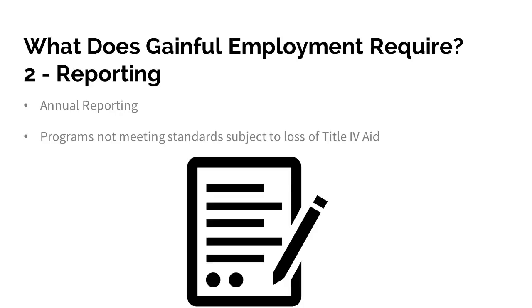Programs that do not result in gainful employment, as measured by students' loan repayment habits, face a series of interventions from the department. These interventions, if unsuccessful, could lead to programs losing eligibility for Federal Title IV aid.